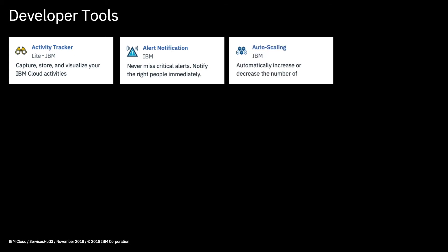Moving on to developer tools. We have the Activity Tracker, which is a means of auditing actions that have taken place in your IBM Cloud account. Alert Notification can be used to set up alerts against applications that then notify people about them — for example, if your application goes down, Alert Notification can detect this and tell someone about it. We have Auto Scaling, which is a great tool for scaling your application automatically based on rules that you define.